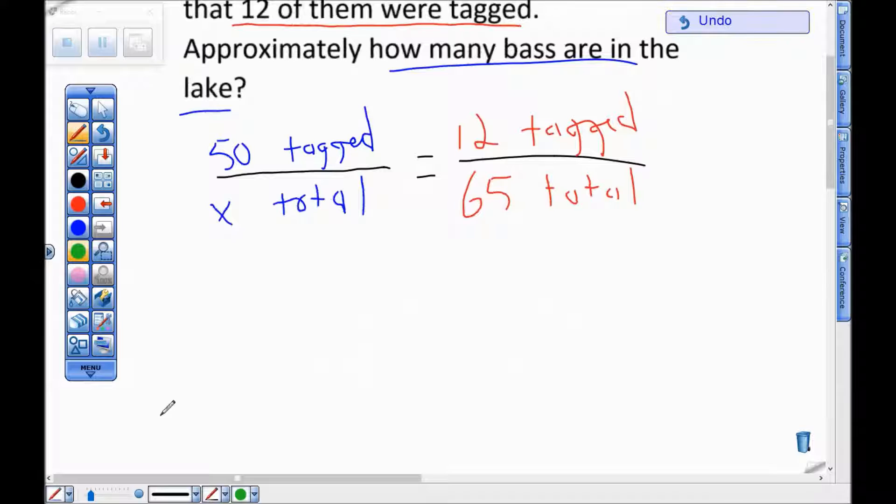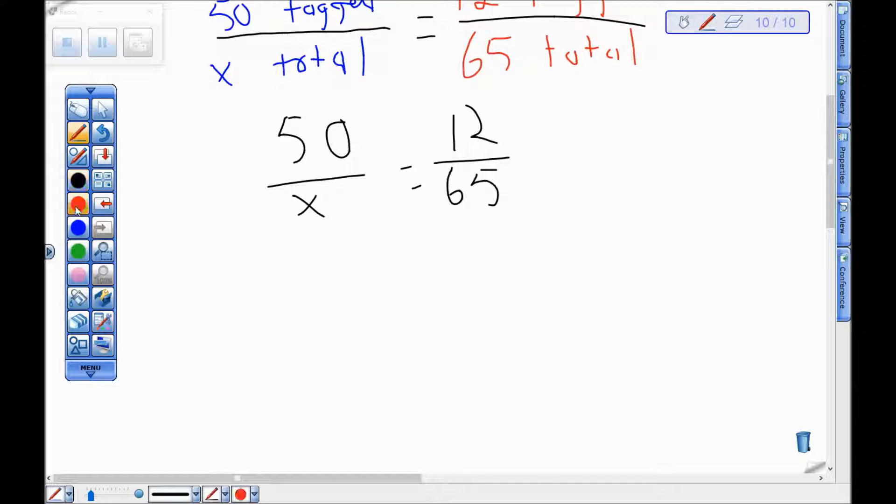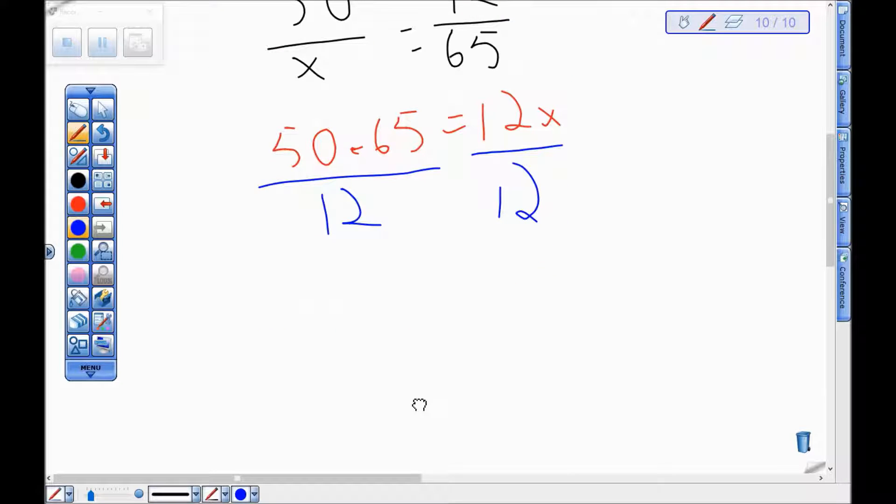So the proportion I'm really trying to solve here is 50 is to x as 12 is to 65. Okay, so I'm going to cross multiply. That'll give me 50 times 65 equals 12x. I'll divide both sides by 12. When I do that I don't get nice numbers. So on the left here I get about, well sorry, I get exactly 270.83 repeating equals x.